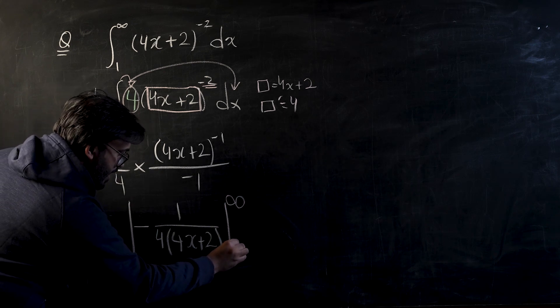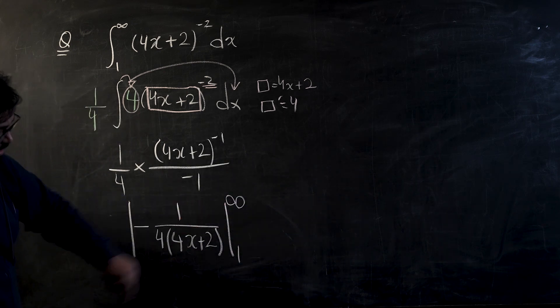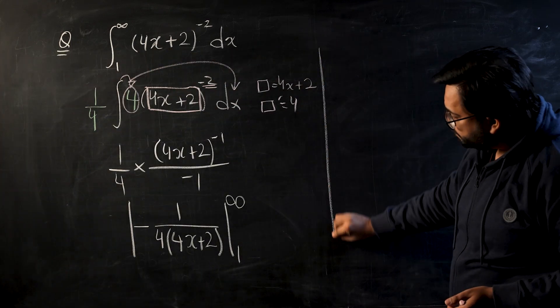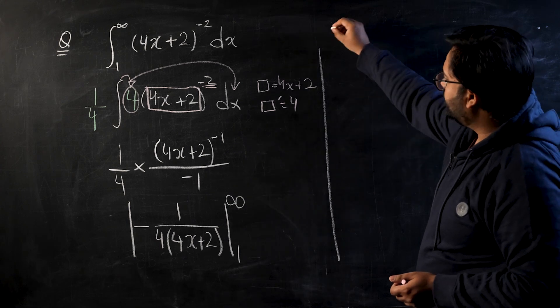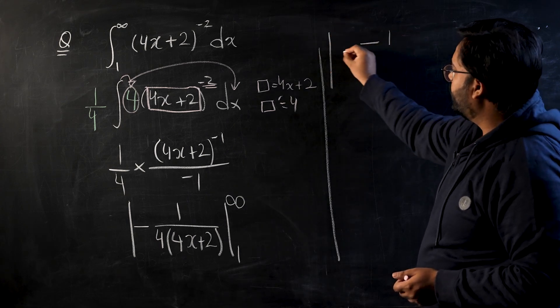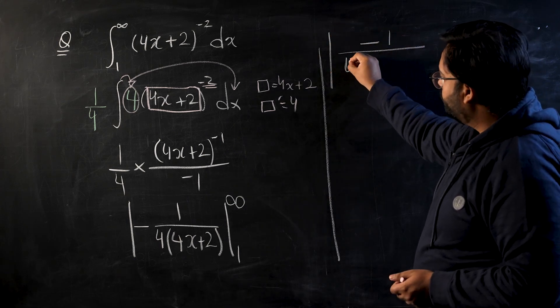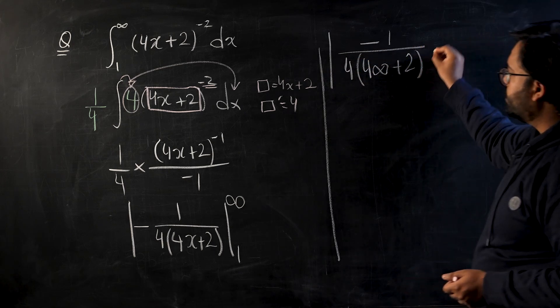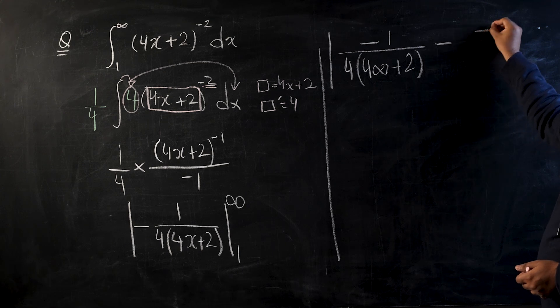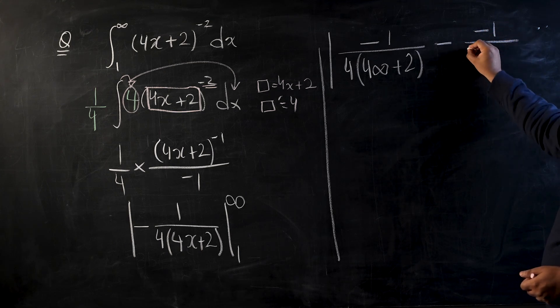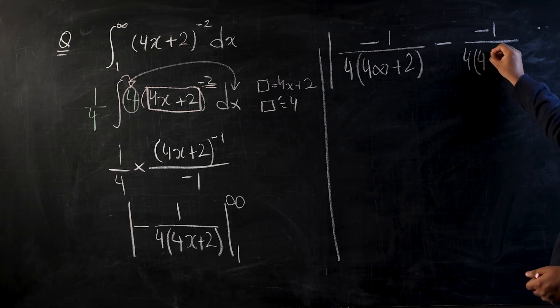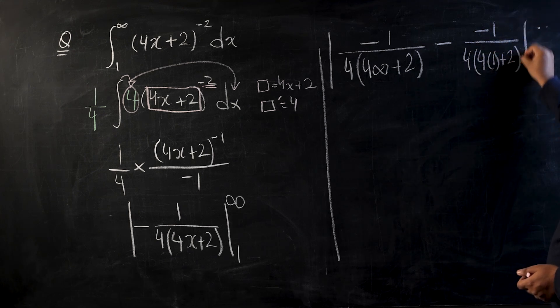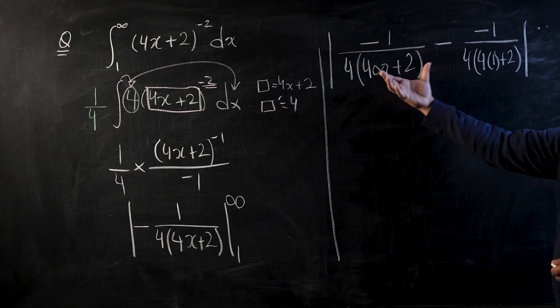So let's have a quick look how we're going to bring infinity into the play. As you guys can see, if I put the upper limit that would become negative 1 over 4 times (4 times infinity plus 2), just leave it like this, minus lower limit which is negative 1 over 4 times (4 times 1 plus 2). So this is the lower limit right now.